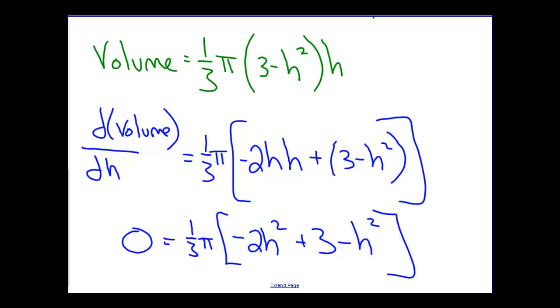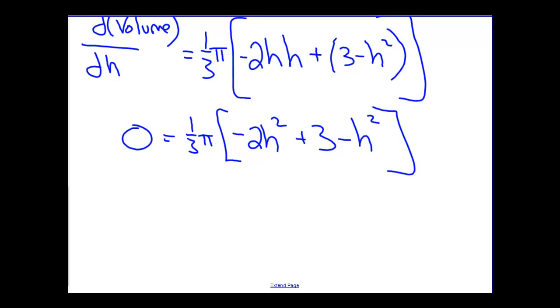The one third pi is irrelevant here, it doesn't affect where this function will be 0. We can divide that out, and when we do that, we find that minus 3H squared plus 3 has to equal 0. That's simply simplifying this particular piece here and bringing that down.